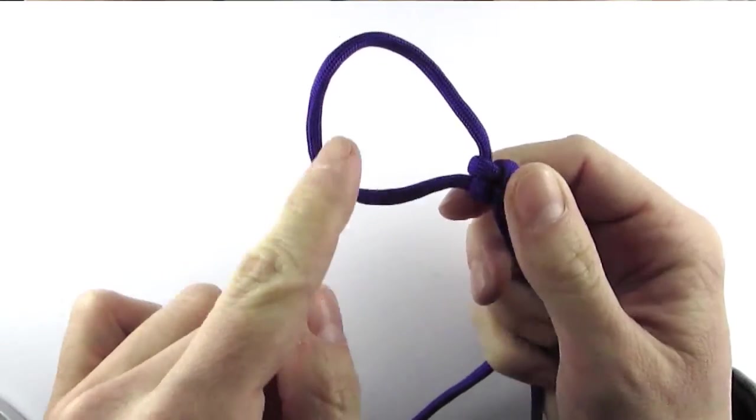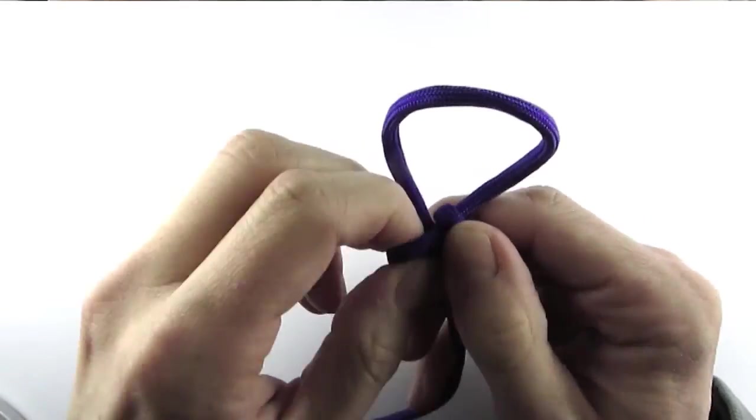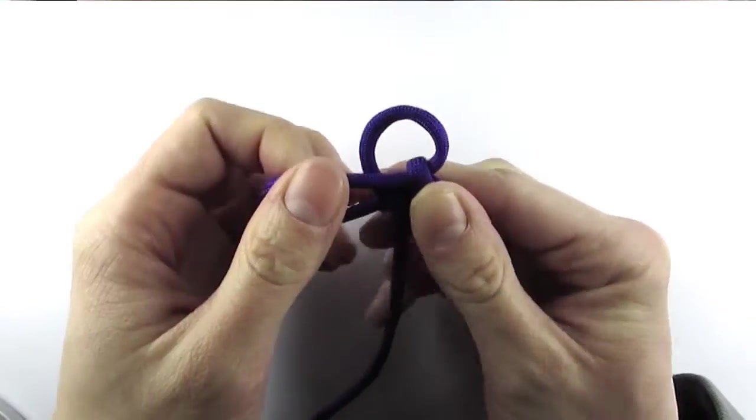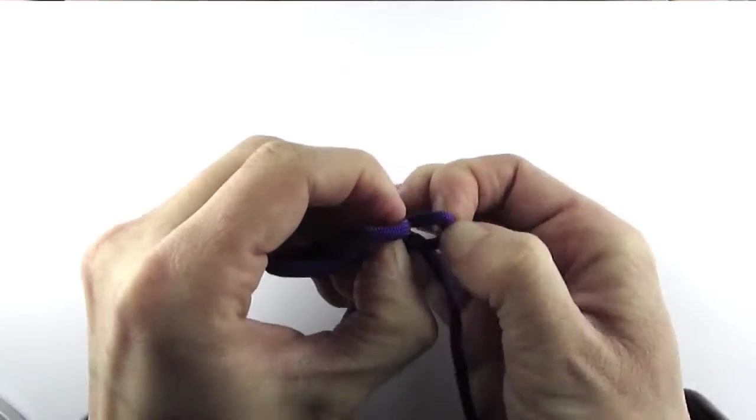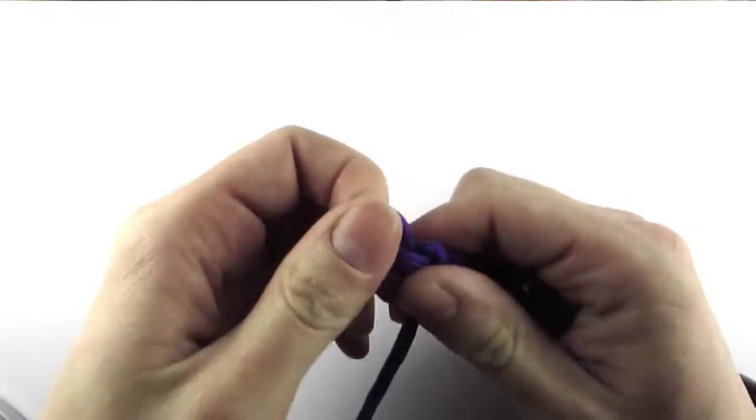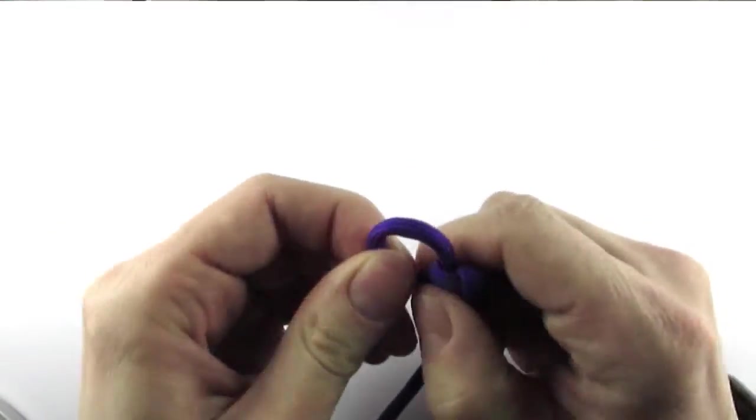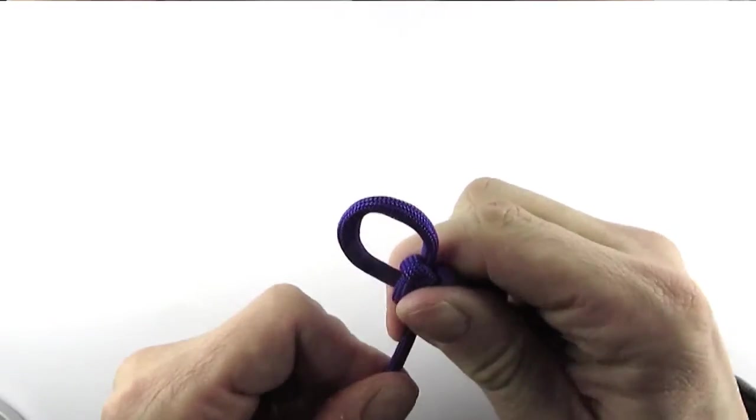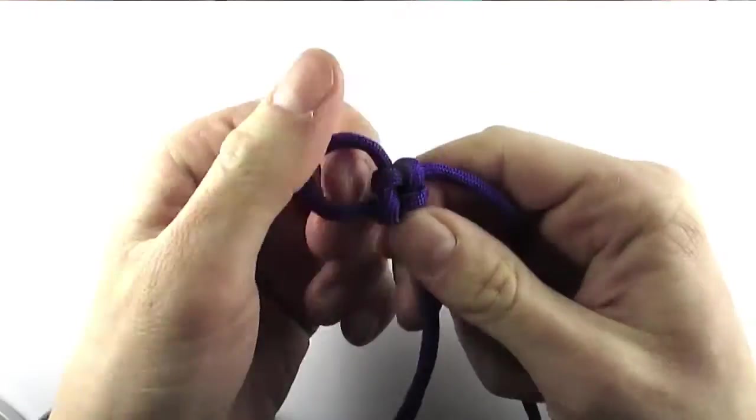As you can see the loop is a bit big so I'm going to remove some of the cord from it. This loop should be big enough to feed the stopper knot through, which will be the lanyard knot in our case.